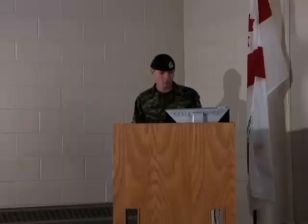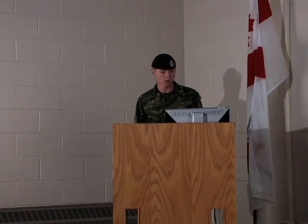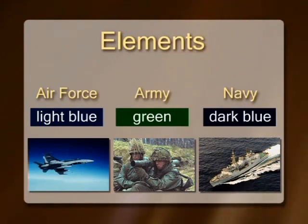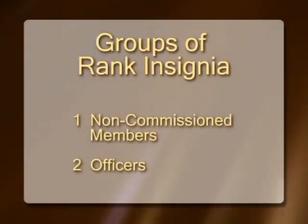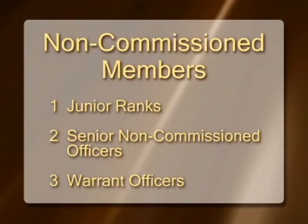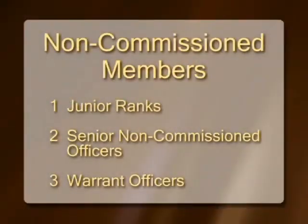In stage one we'll be looking at the CF rank structure — specifically non-commissioned members and officer ranks. There are three elements within the Canadian Armed Forces: first, the Air Force with a light blue epaulet; next, the Army with a green epaulet; and the Navy with a dark blue epaulet. There are two groups of rank insignia in the Canadian Forces: non-commissioned members and officers. Under non-commissioned members, they are divided into three categories: junior ranks, senior non-commissioned officers, and warrant officers.